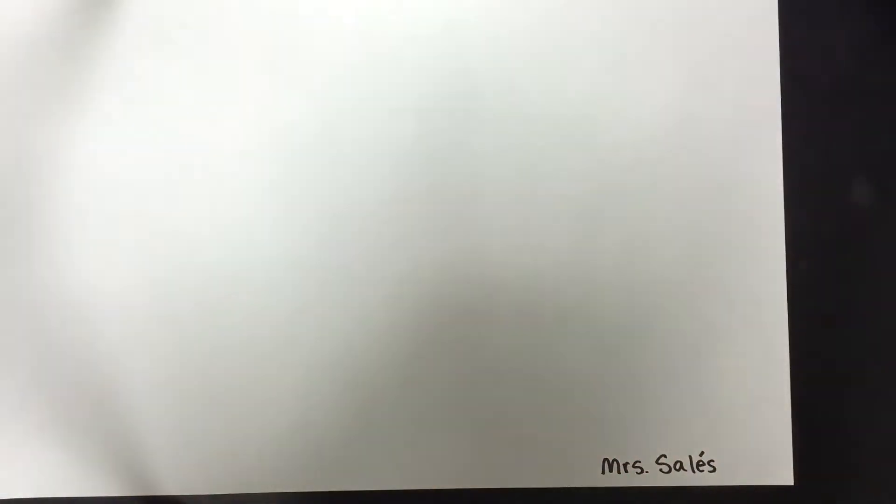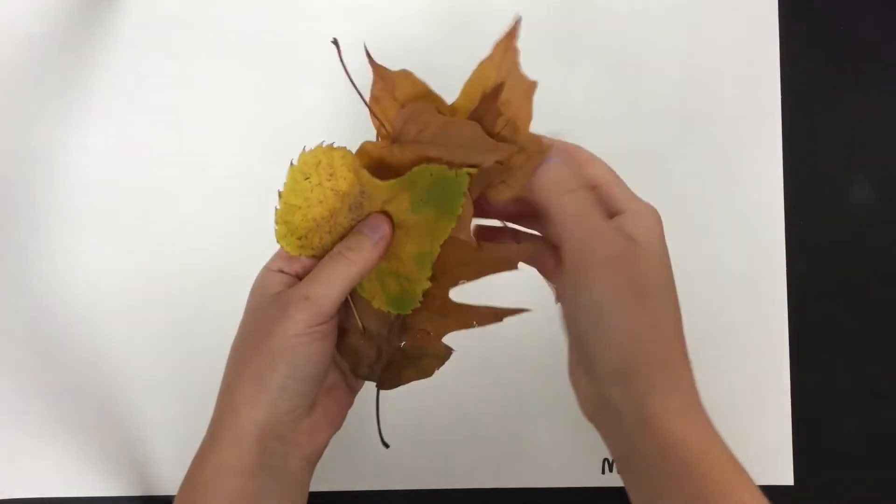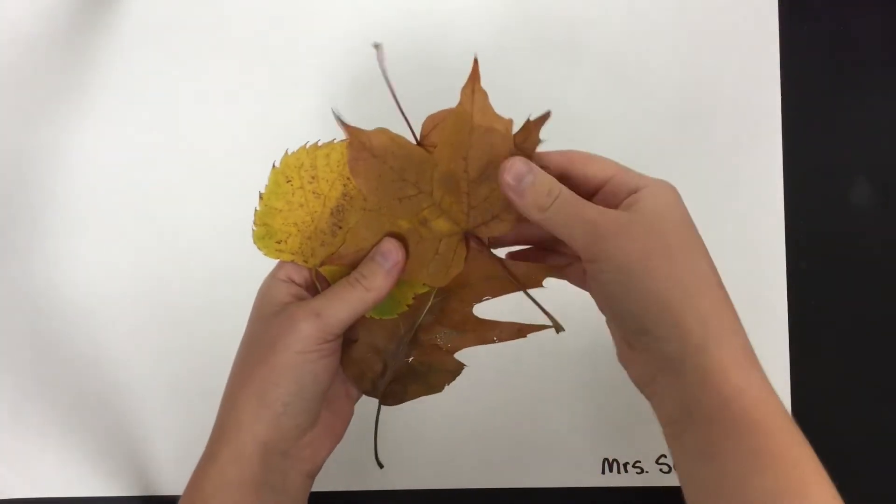You're going to start out with a big piece of paper with your name on it, some crayons, and some leaves. Mrs. Celeste collected these especially for the project.